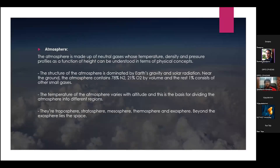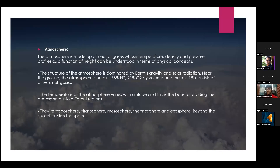Let's talk about the Earth's atmosphere. Earth's atmosphere is made up of neutral gases whose temperature, density, and pressure are functions of height. The composition is dominated by Earth's gravity and solar radiation. Near the ground, the atmosphere contains 78% nitrogen, 21% oxygen by volume, and 1% other gases. The temperature of the atmosphere varies with altitude, dividing it into regions: troposphere, stratosphere, mesosphere, thermosphere, and exosphere. Beyond the exosphere lies space.